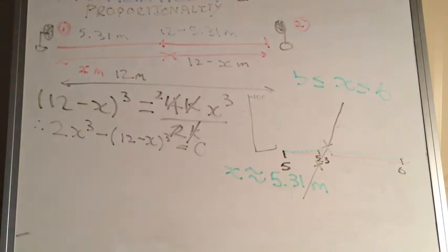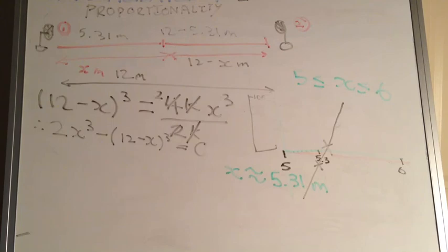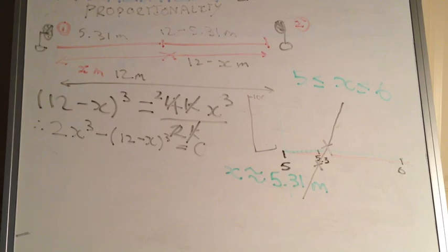So that's the video on proportionality and optimisation using calculus. The hardest part is setting up the equation — remember the constant of proportionality and what the question actually says. If you have any questions, feel free to write in the comments below. Thank you for watching.